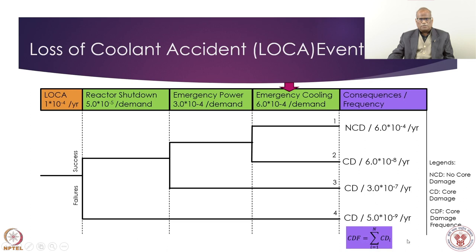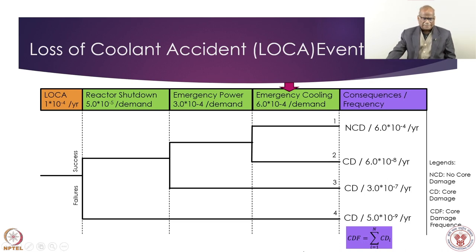The core damage frequency for the plant for the LOCA event is the sum of all core damage sequences. The result is in the range of less than 10⁻⁶, which is consistent for nuclear plants. But a critical question is how these probabilities have been arrived at — the loss of cooling frequency is estimated from generic data and plant-specific data. For complex safety systems, how is the failure probability estimated? The next slide shows an emergency cooling system fault tree.